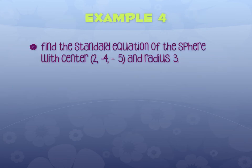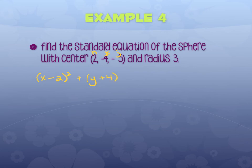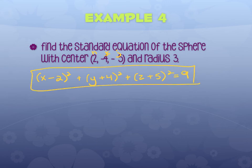If given a center and a radius, you can write the standard equation. For example, with center (2, −4, −5) and radius 3: x is (x−2)², y being negative 4 becomes (y+4)², z being negative 5 becomes (z+5)², and r squared is 9. So the standard equation is (x−2)² + (y+4)² + (z+5)² = 9.